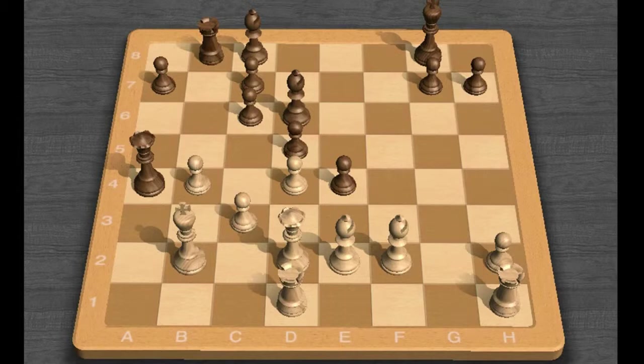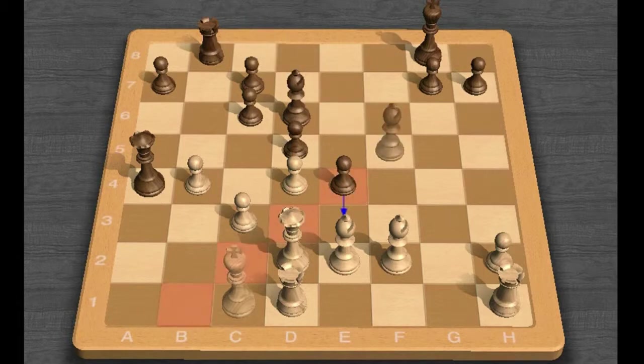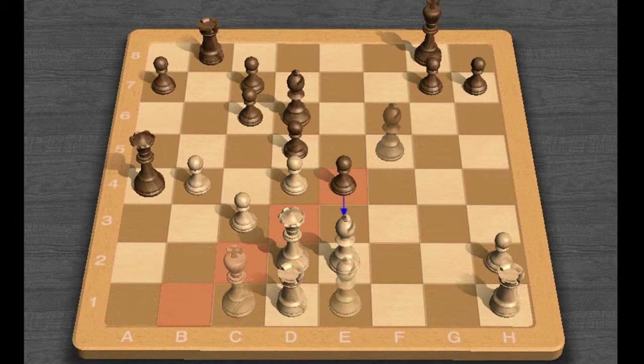People have debated for years whether Morphy could have won after the correct defense, King C1. Probably Black should then play Bishop F5, when the retreat Bishop E1 seems to offer White his best hope.